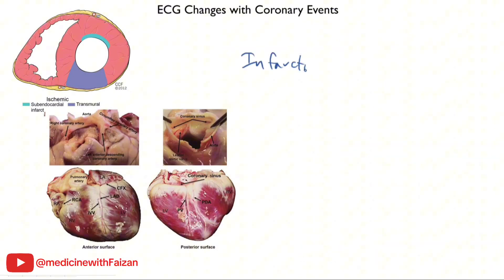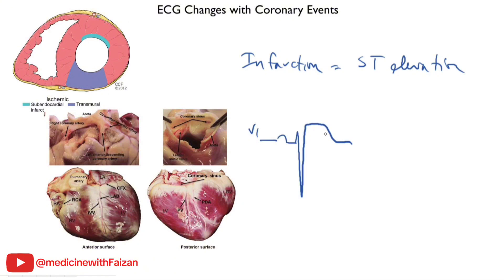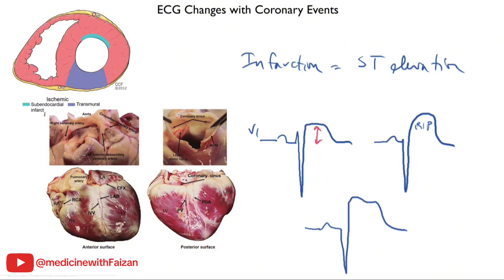ST segment elevation is the hallmark of an acute MI. In the case of LAD occlusion, looking at V2, we generally see a pattern where the ST segment rises above the baseline. In extensive infarcts, the changes can be so dramatic they are referred to as tombstones because of how they look. When the artery first gets occluded, you may not see ST segment elevation — you may just see tall T waves or other non-specific changes. But as time goes on, you get clear ST segment elevation and it may persist for days.